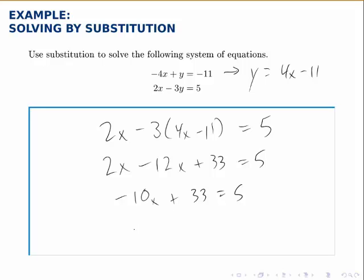Subtracting 33 from both sides, we get negative 10x equals negative 28. And then dividing by negative 10, x equals 28 over 10, or 14 over 5.